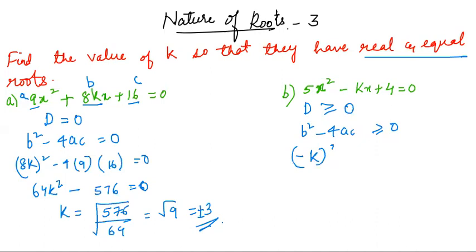Minus k whole square minus 4 into 5 into 4. So k square minus 5, 4 is 20, 20 into 4 is 80. K square is greater than or equal to 80.